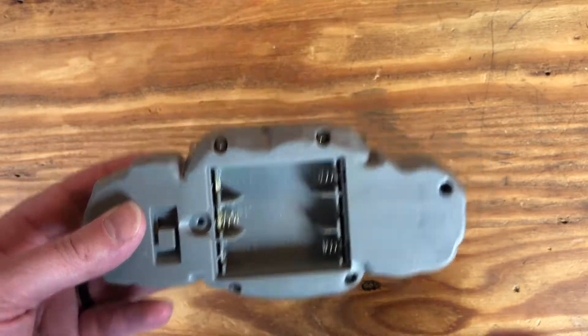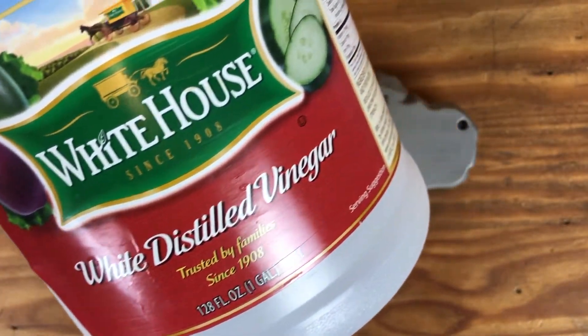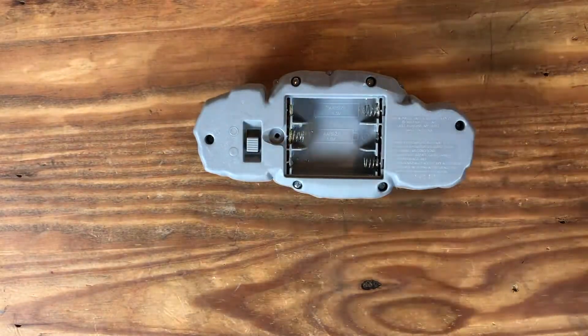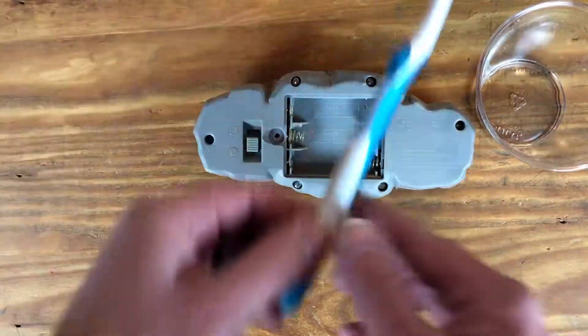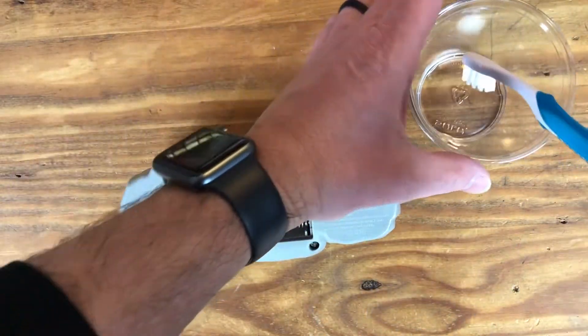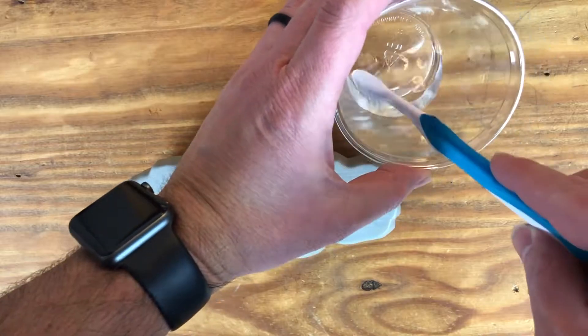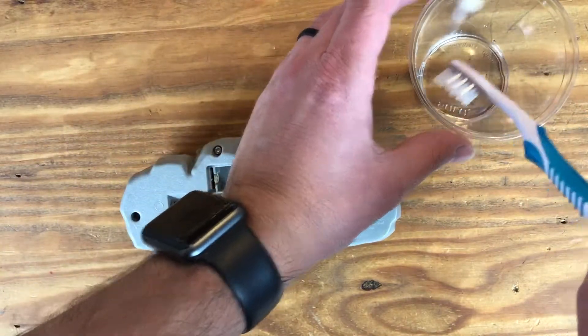Well, the first thing you're gonna need is just some white vinegar. I'm gonna start with a regular old toothbrush. If you have like a wire brush or anything like that you could use that as well. But just get a little bit of vinegar on there, not too much, you don't want it to get everywhere.